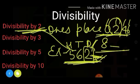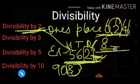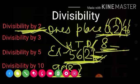Let's take another example. For example, I have 908. So here we check the ones place, and the ones place digit is 8. That means this number 908 is divisible by 2. So this is the rule for 2.